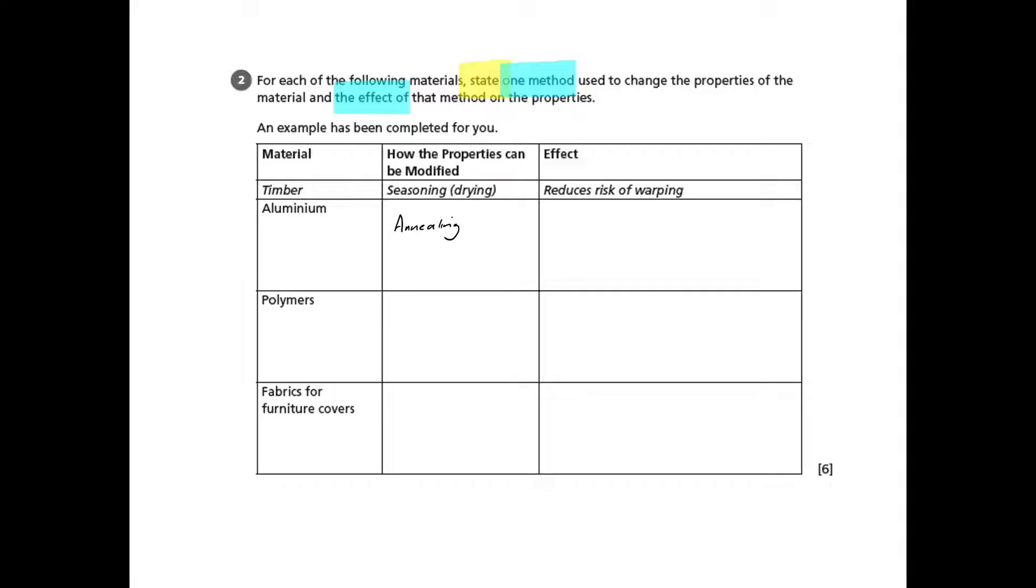So we'll start off with aluminium and the most obvious thing we can think of is probably annealing, that's the heating up and slow cooling of it. And the effect of that on the property is that it increases malleability.